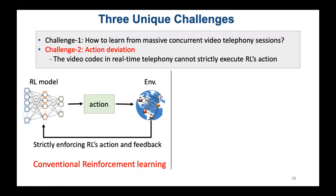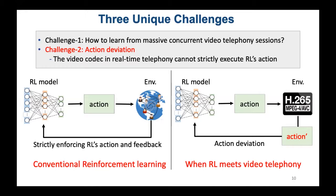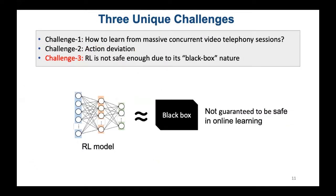The second challenge concerns a basic requirement for in-situ learning: the learning algorithm's actions should be faithfully executed. For conventional reinforcement learning, like AlphaGo and offline simulation training, the environment can strictly enforce the RL agent's action and provide feedback. However, when RL meets video telephony, its action cannot be strictly enforced by the video codec, particularly in short timescales. We refer to this problem as action deviation. Thirdly, an RL algorithm is a black box which learns by following a trial-and-error principle. Its actions are not guaranteed to be safe when applied to online learning, and a wrong decision risks disrupting the system and damaging QoE.